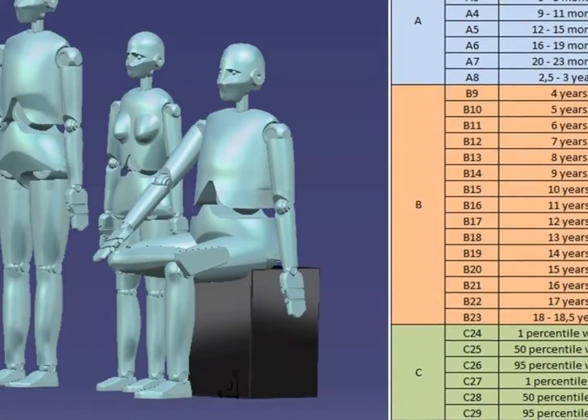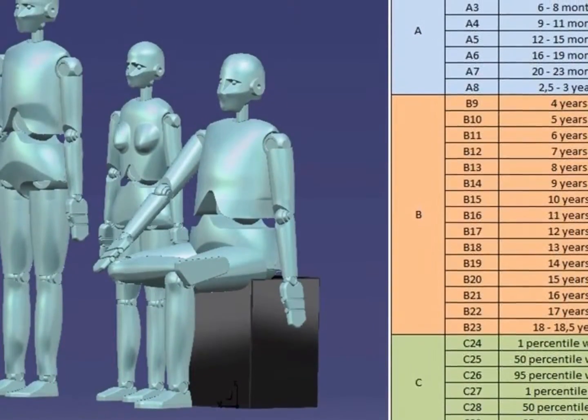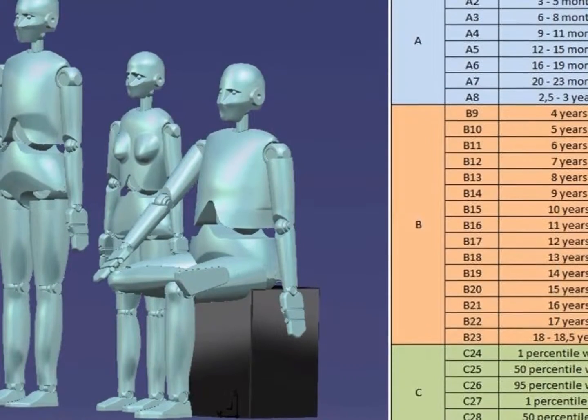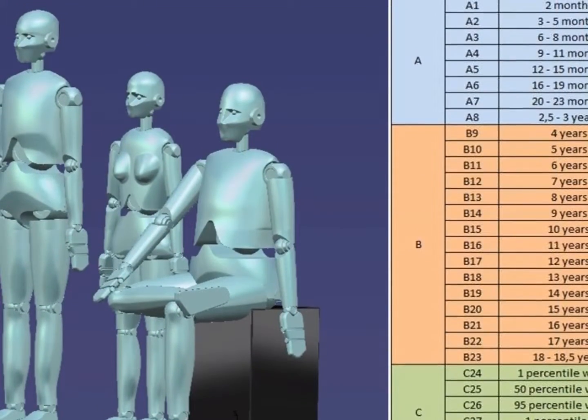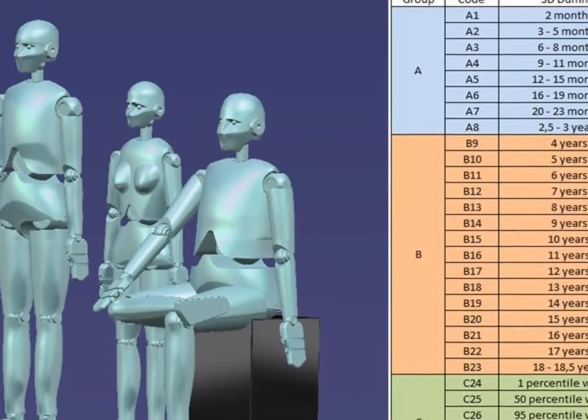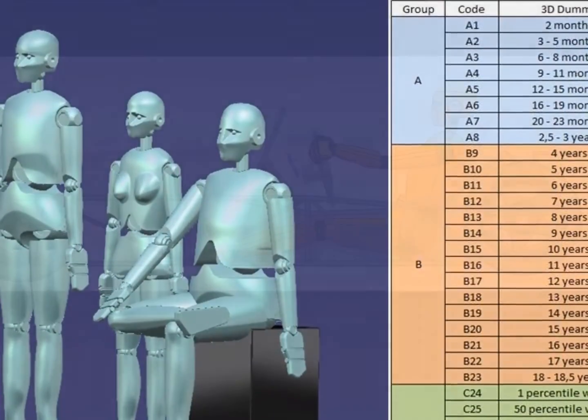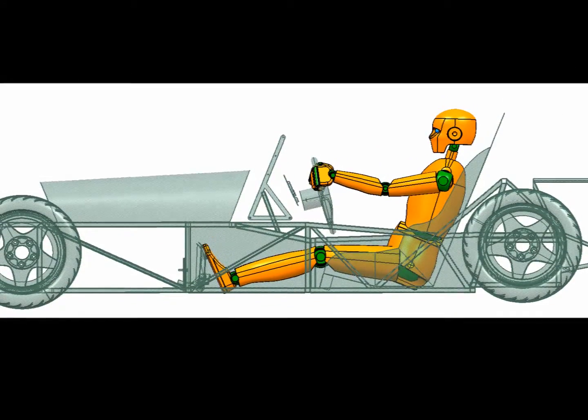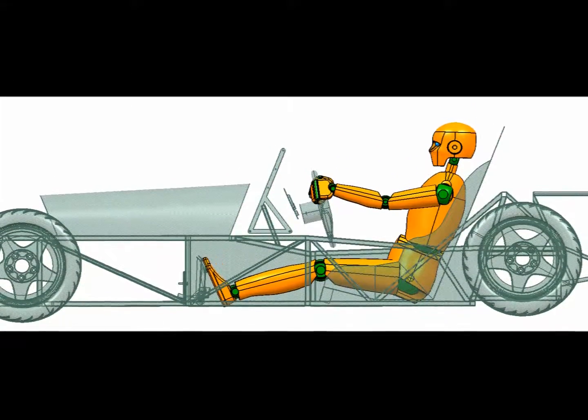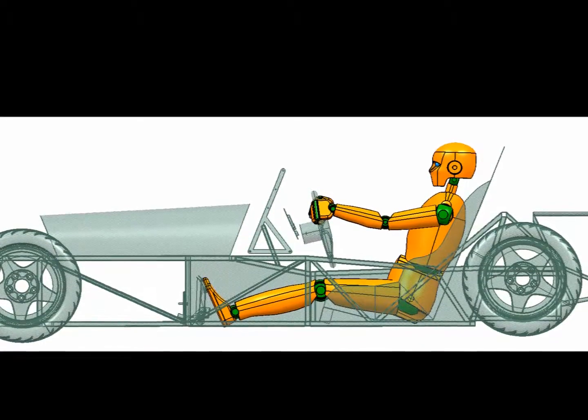What we are proposing with our project is to model a whole range of 3D digital anthropometric models, 29 models in total, covering the whole range of percentiles, from 2-month-old babies to both female and male adults, these ones as 1, 50, and 95 percentiles, and all of them at an affordable price.